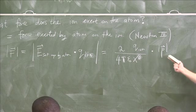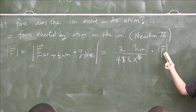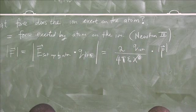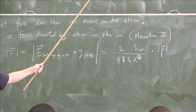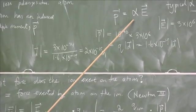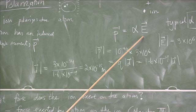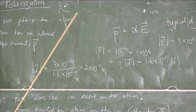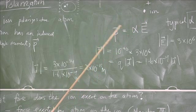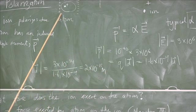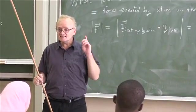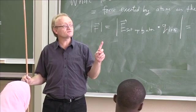Now, is the magnitude of p a constant? Is it a constant? How do we get the magnitude of p? The magnitude of p equals some constant times the magnitude of the electric field — and this is the electric field that is polarizing the atom. That's the electric field set up by the ion. If I move the atom further from the ion, the electric field gets smaller, so the electric dipole moment gets smaller. The electric dipole moment is not a constant — it also depends on position.